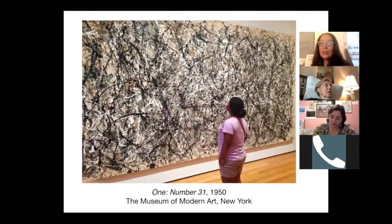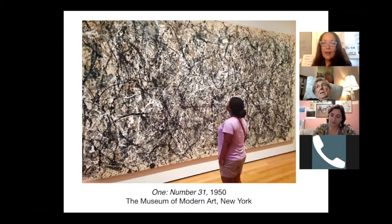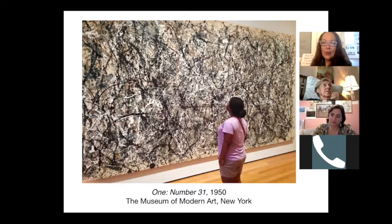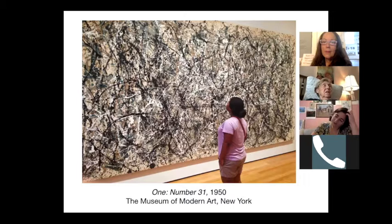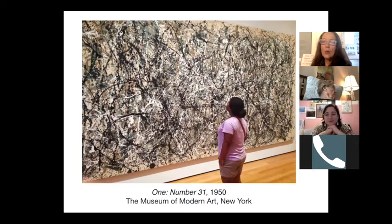Even Lee Krasner would tear up her paintings and glue them back together in a new composition. So it's a very physical act of painting. I love this picture because it shows the viewer gazing at the painting. In modern art, the viewer completes the painting — the viewer interprets the painting in his or her own way. There's not one way to look at modern art.